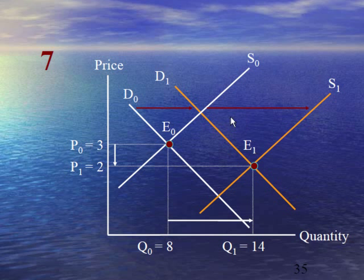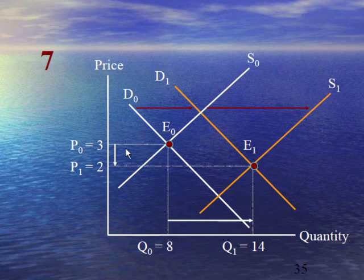Case number 7 shows that rise in supply is more than rise in demand, and the equilibrium point moves from E₀ to E₁. Because rise in supply is more, there will be a surplus in the market, and due to this surplus prices will decrease from 3 to 2 and equilibrium quantity will increase from 8 to 14.